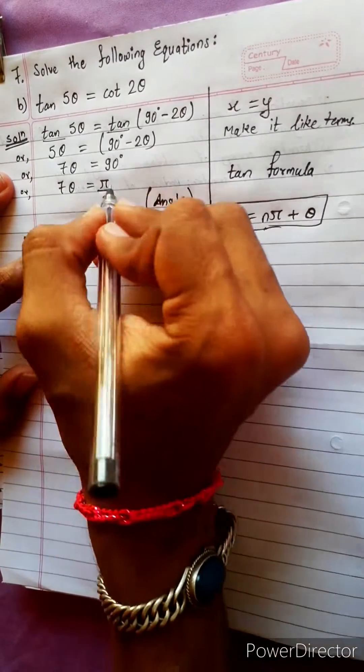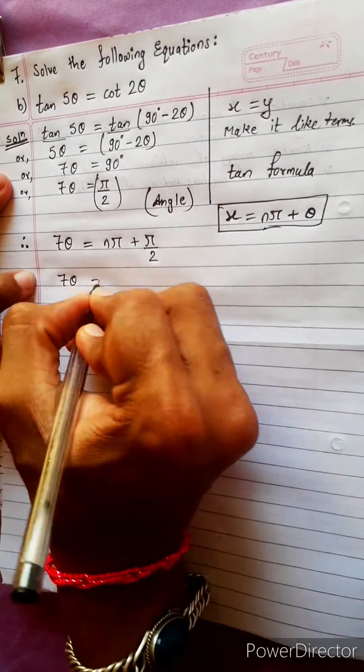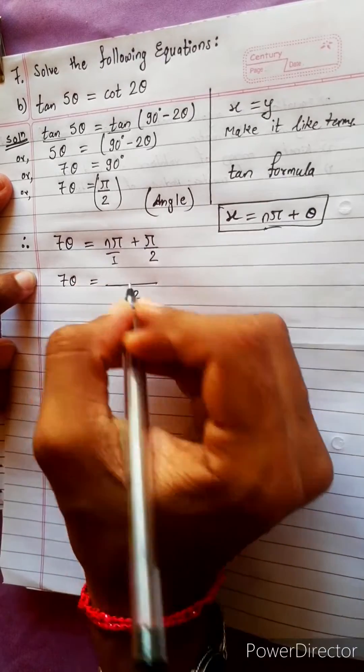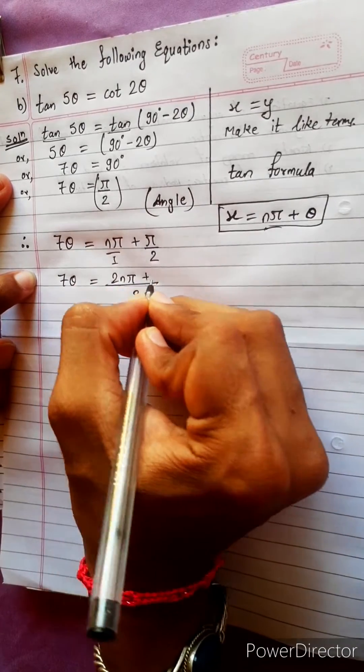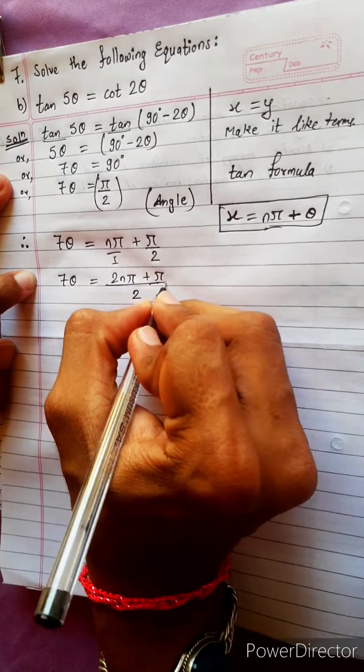Plus θ means this angle π by 2. Now take LCM. 7θ equals to LCM 2, so 2nπ plus π. And it's plus minus in general, but in tan it's only plus. Only positive.